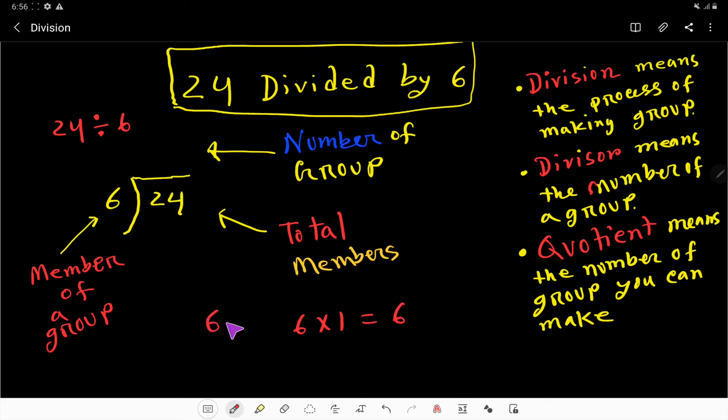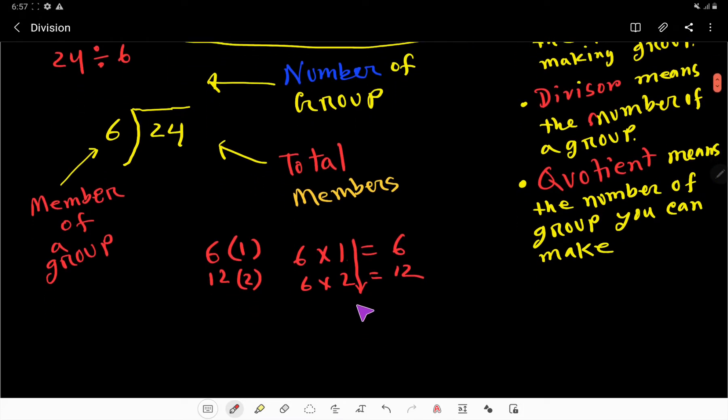So what will happen? 6 times 2. Okay, 6 times 2 will be 6 with this 6, that is 12, right?